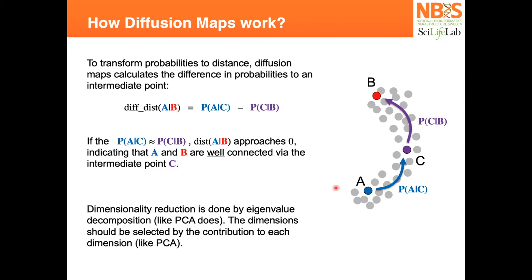After this, you can do dimensionality reduction just like in PCA, and then you have the different contributions of every dimension that are more important. So you can filter which diffusion map components are the most important.